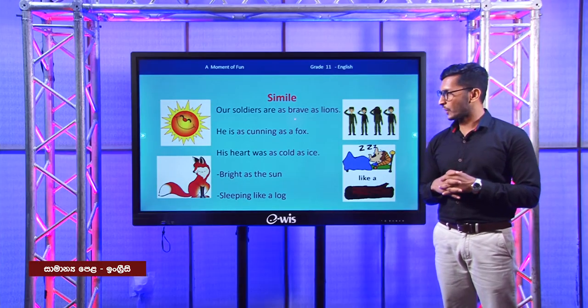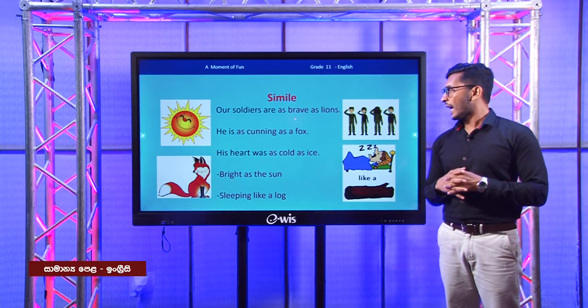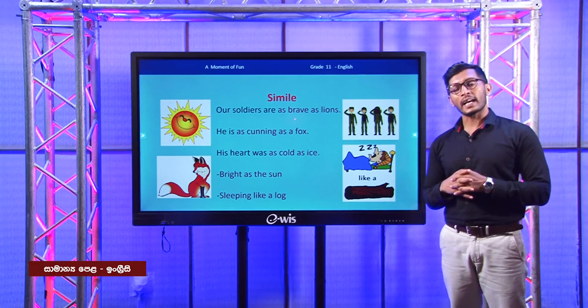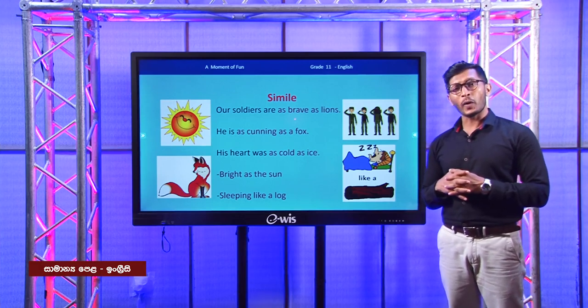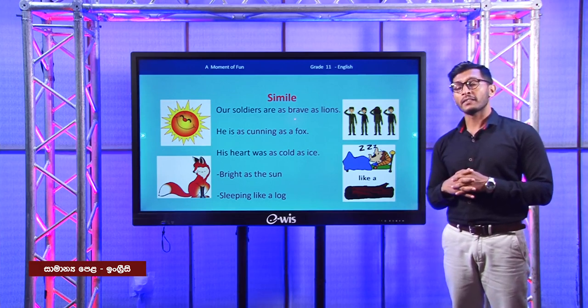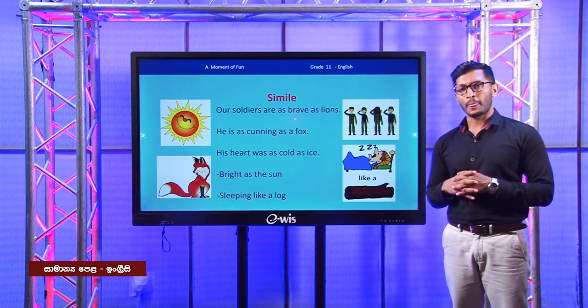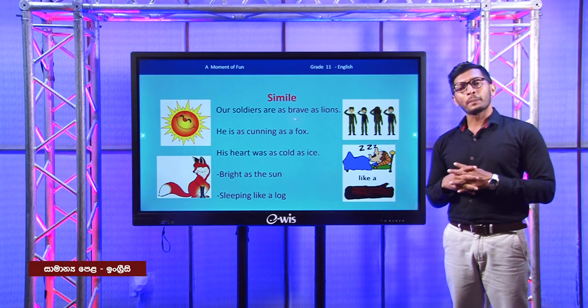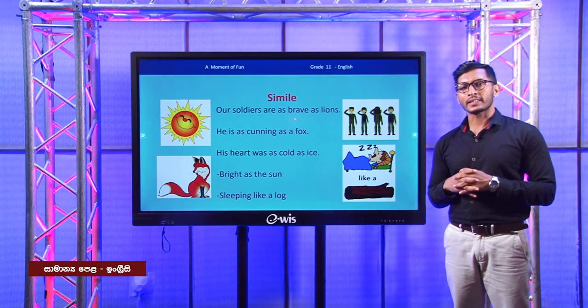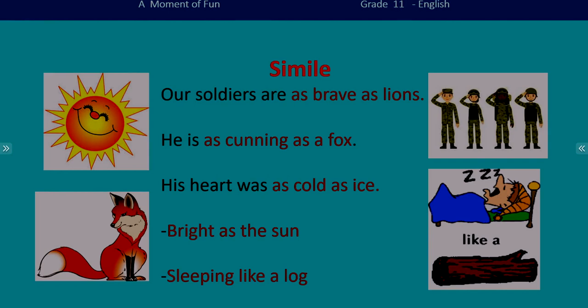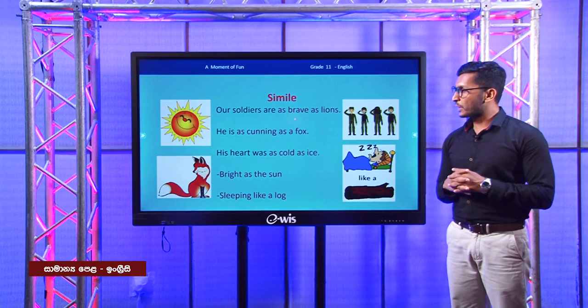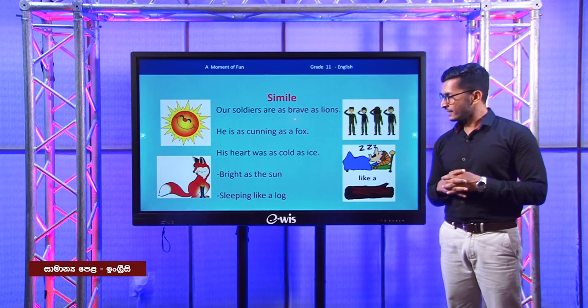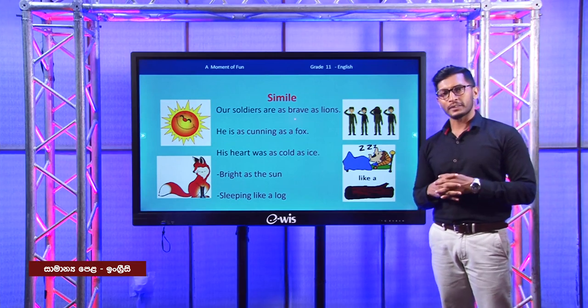Now see the third one: his heart was as cold as ice. We know ice is solid and frozen. If a man or person has a cold heart, he doesn't feel any compassion or affection. We also say bright as the sun and sleeping like a log.